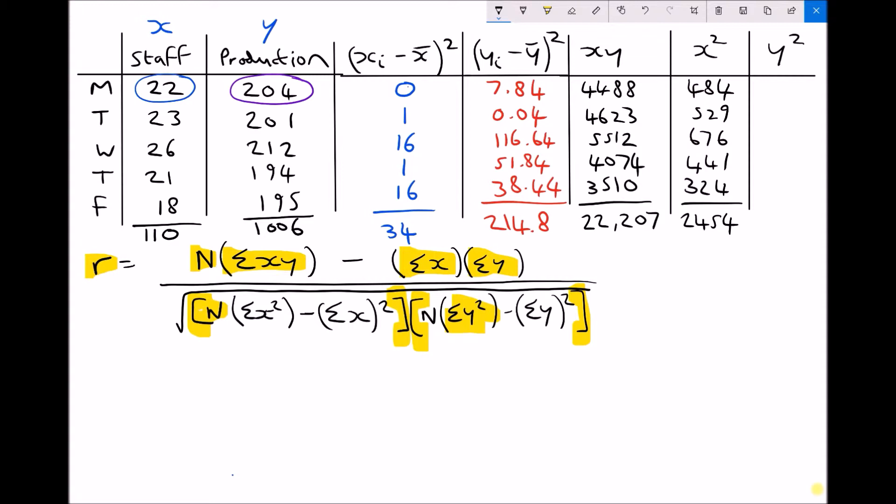And finally we need to repeat that for our y data. So 204 squared, 201 squared, 212 squared, 194 squared, 195 squared and then add them all together. And here are the results for that. So the sum of all of our y squared data is 202622. Now there's a lot of number work there and there's a lot of potential for making errors. However, I believe it's important that you can see where these equations come from and that you have an understanding of how to apply them.